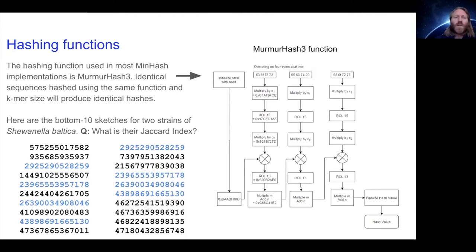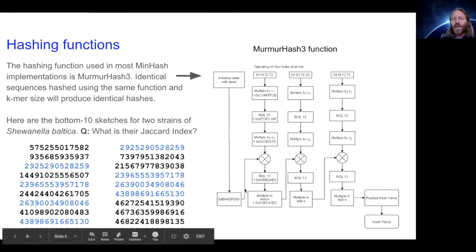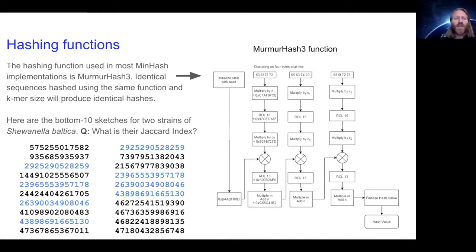With any hash function, an identical sequence hashed using the same function and k-mer size will produce the same hashes. So if you take one genome and another genome and run them through this algorithm, the same k-mers will end up with the same hashes. The MurmurHash3 algorithm breaks the input into chunks, then processes those chunks by multiplying by a constant, doing a shift permutation, multiplying by another constant, XORing with some seed, doing another permutation, multiplying by another constant, adding a constant, and doing that iteratively — producing a nice random hash that's computationally efficient and very fast.